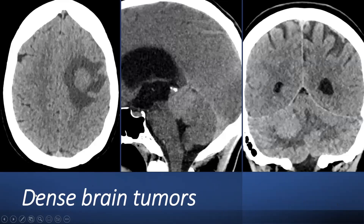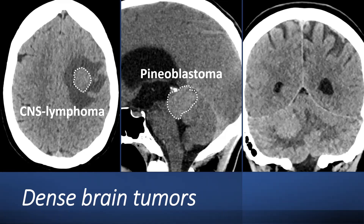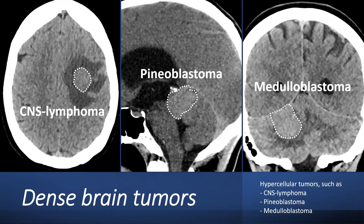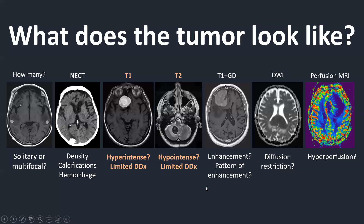If a tumour is spontaneously dense on CT, consider CNS lymphoma. If located in the pineal gland region, it's probably a pineoblastoma. If in the posterior fossa, especially in children, it's probably a medulloblastoma. These tumours are dense because they are hypercellular with narrow intercellular spaces and therefore contain less water. They are generally more malignant tumours — pineoblastoma and medulloblastoma are highly aggressive, and CNS lymphoma is as well.